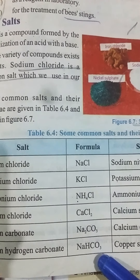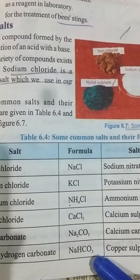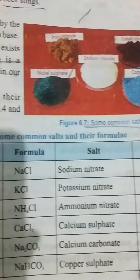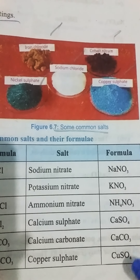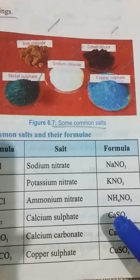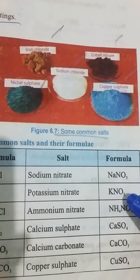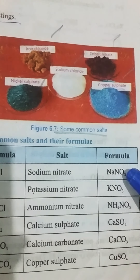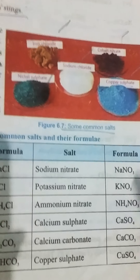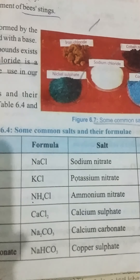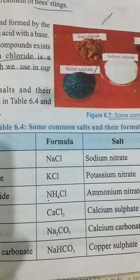In the next group we have three salts with the carbonate formulas: sodium carbonate, sodium bicarbonate, and calcium carbonate. Then we have two salts with sulfate formulas: calcium sulfate and copper sulfate. And with the nitrate formulas: sodium nitrate, potassium nitrate, and ammonium nitrate. Try to learn these formulas and the salt names by heart — it will be helpful for you.